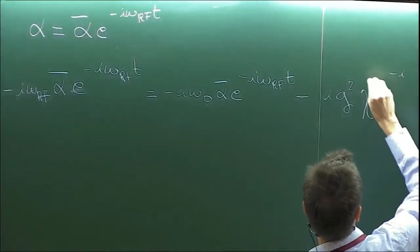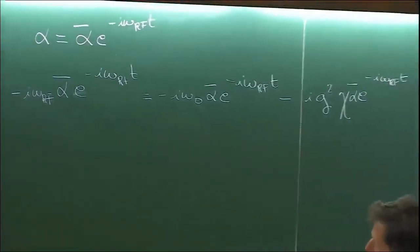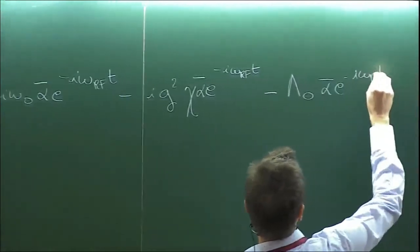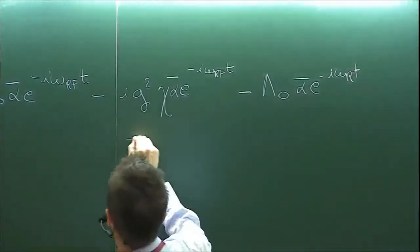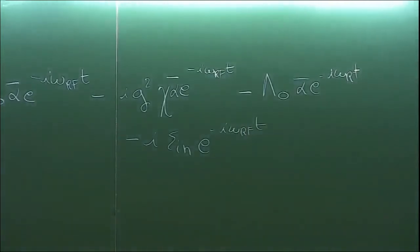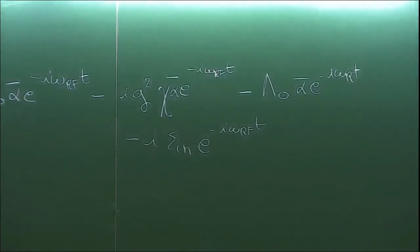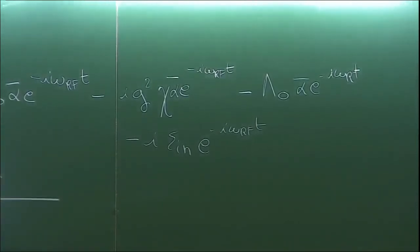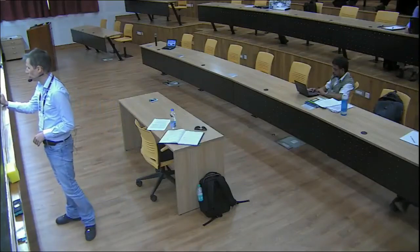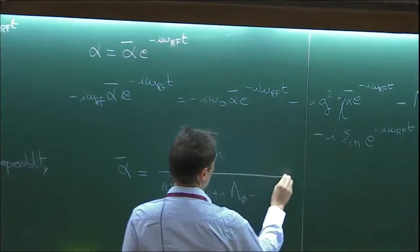Taking only the first term and the drive, in the stationary limit this is a constant as a function of time and you end up with a simple expression: the amplitude α of the photonic field is just a simple ratio.